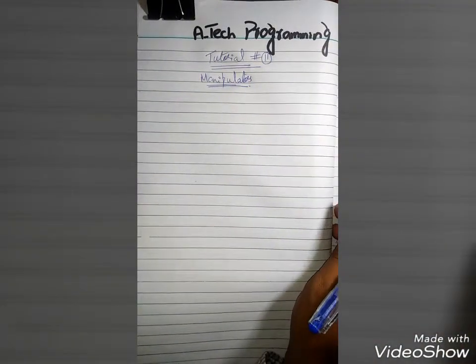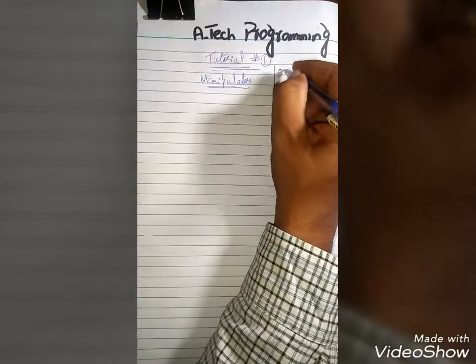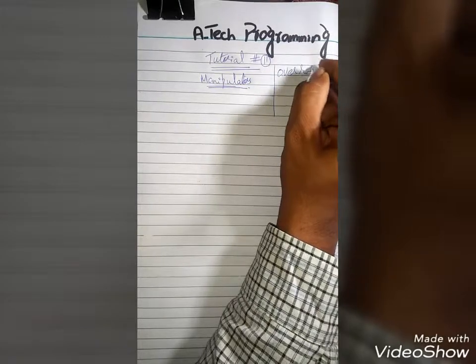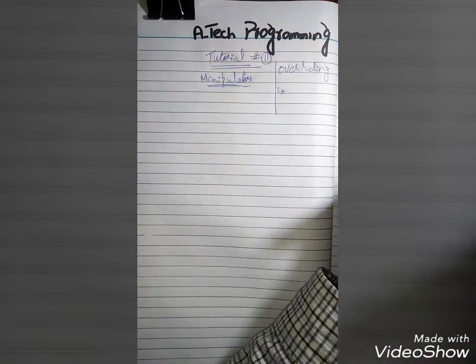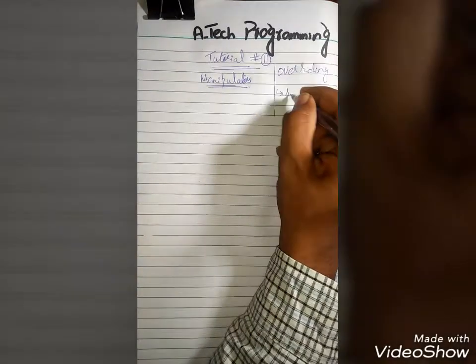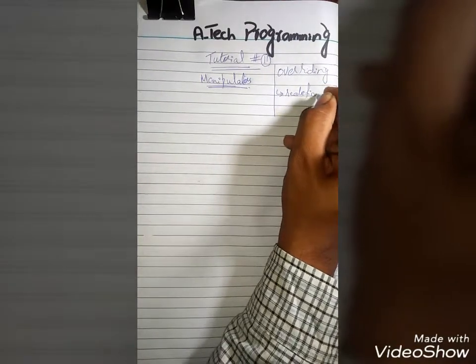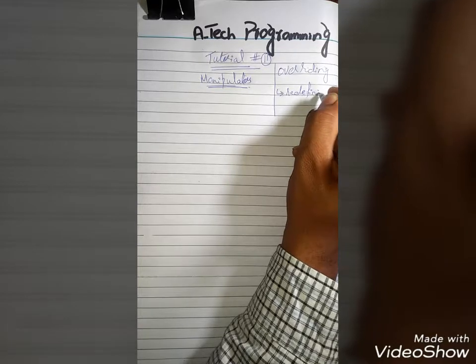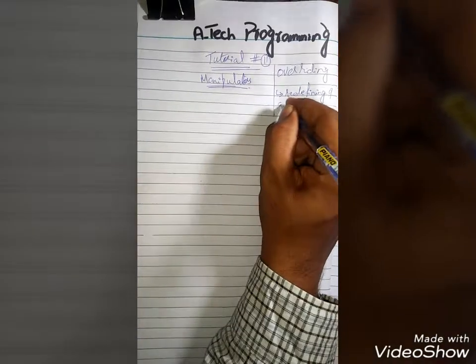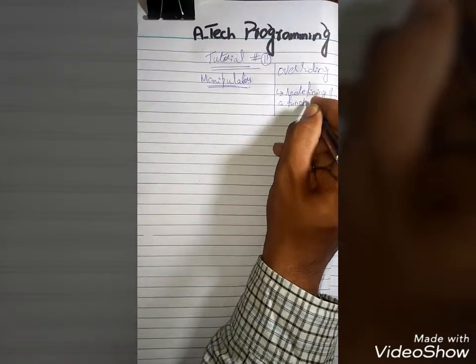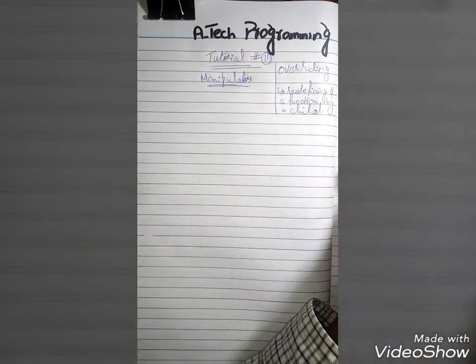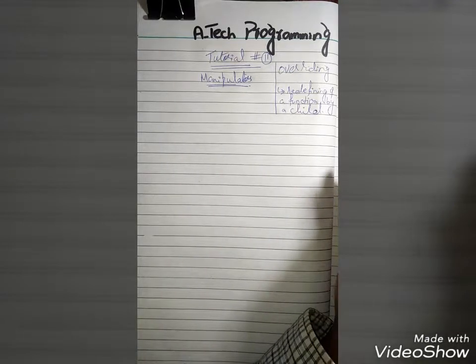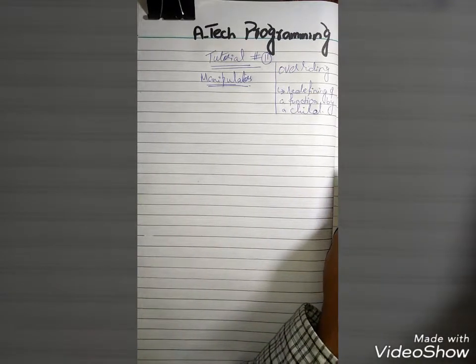Before explaining manipulators, I would like to recap my last lecture on overriding. Overriding is the redefining of a function by a child class. The child redefines the body of a function that was defined by the parent class.